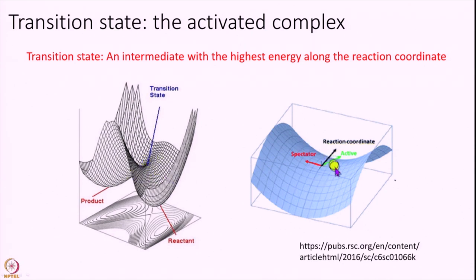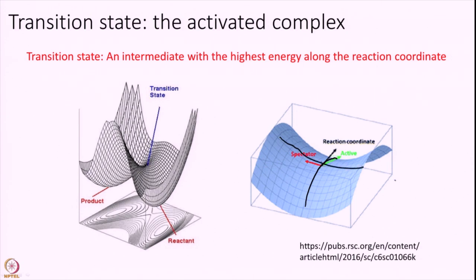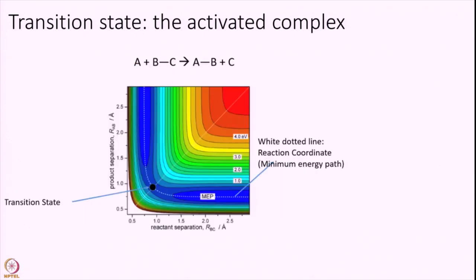Let us look closer at the transition state. I have simply zoomed into the transition state point. Along the reaction coordinate, let me get my pen — this is my reaction coordinate. Along this line, the transition state is the maximum energy structure. But if I draw a line perpendicular to the reaction coordinate, then you see that the transition state is a minimum energy structure. That is a very important point you should remember.